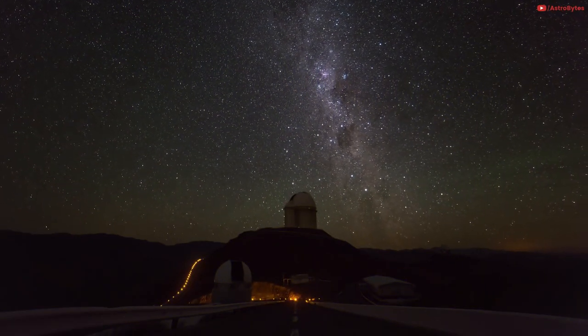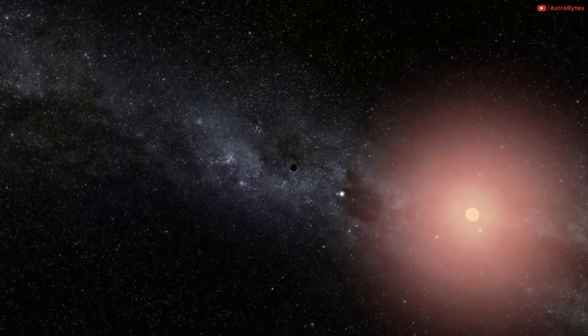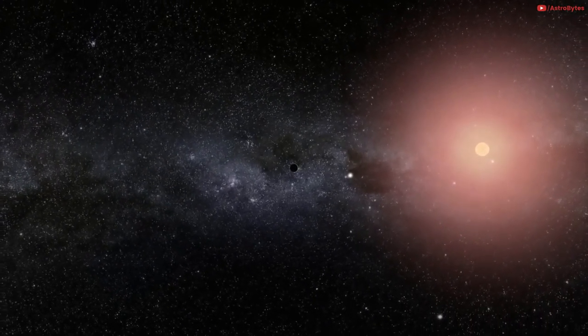Betelgeuse is one of the most luminous stars in the night sky. It is the closest supernova candidate, which is situated 700 light-years away from Earth.